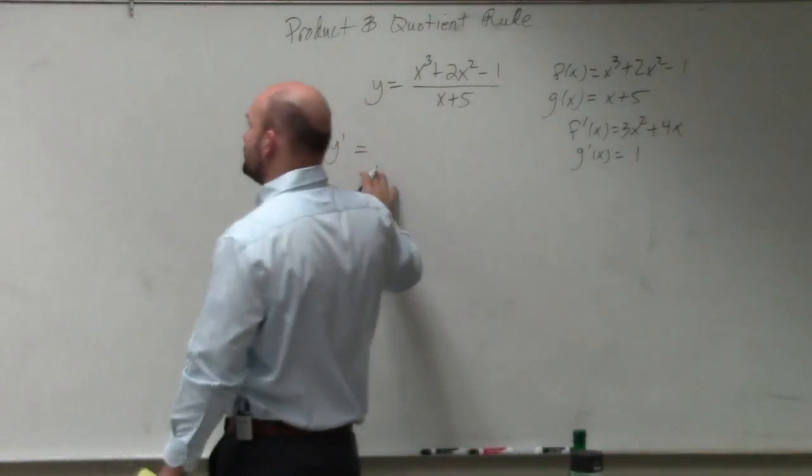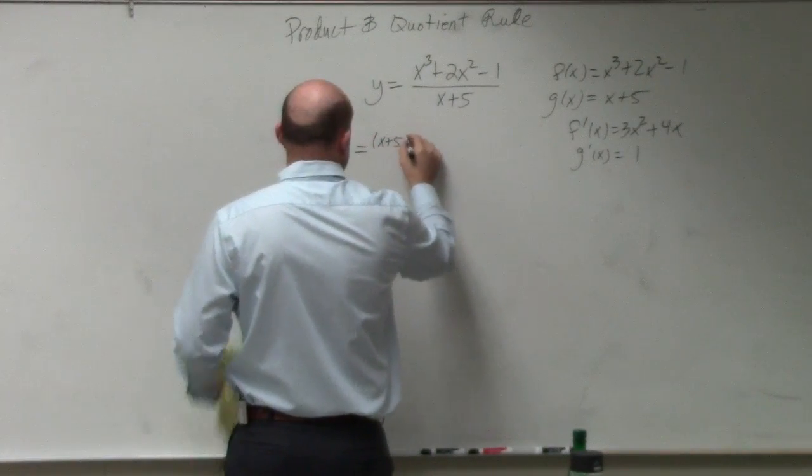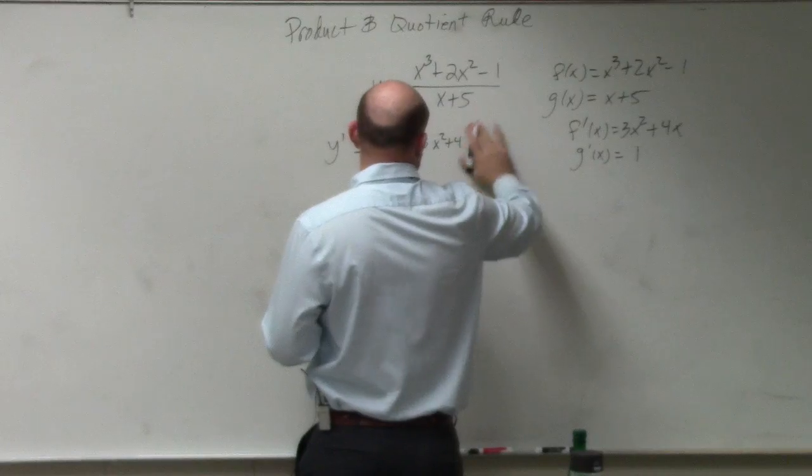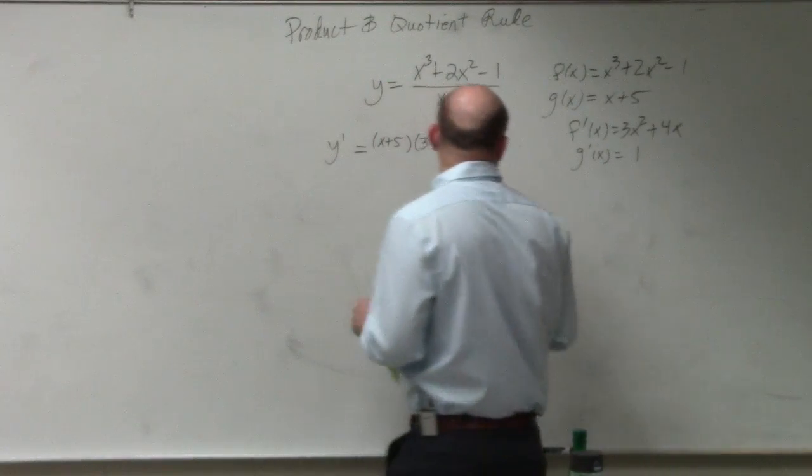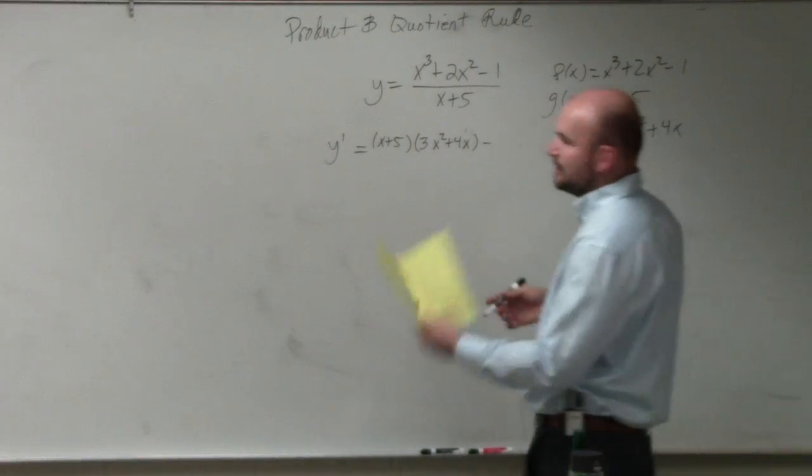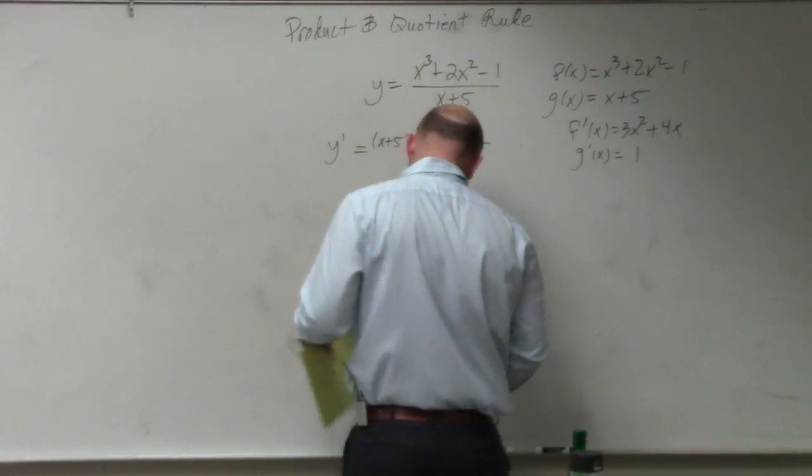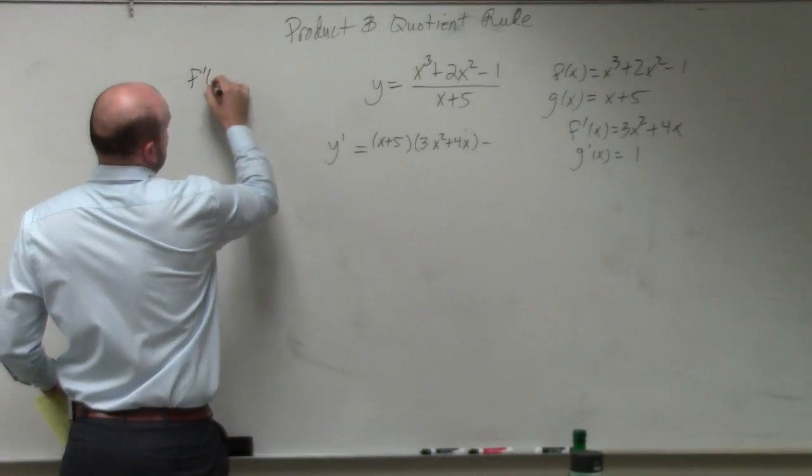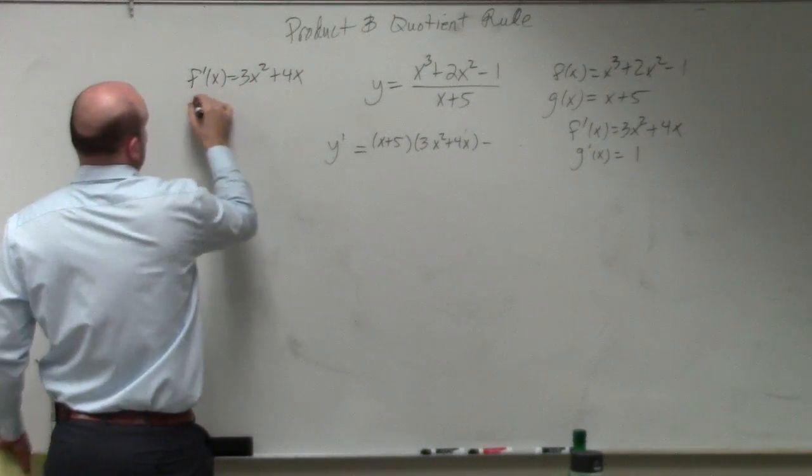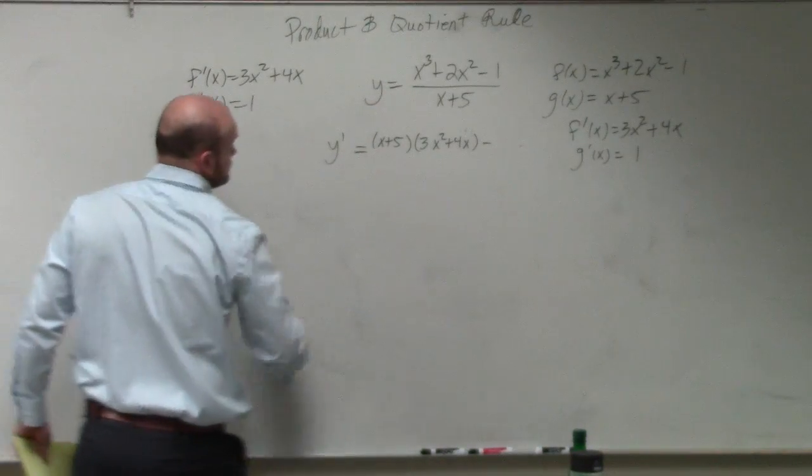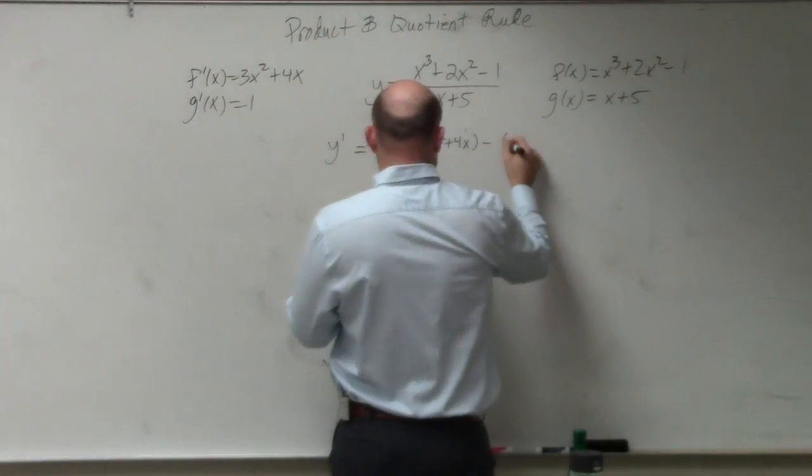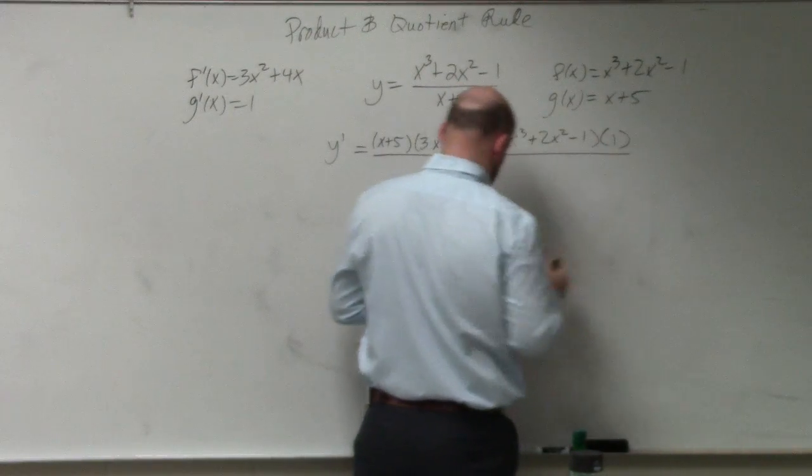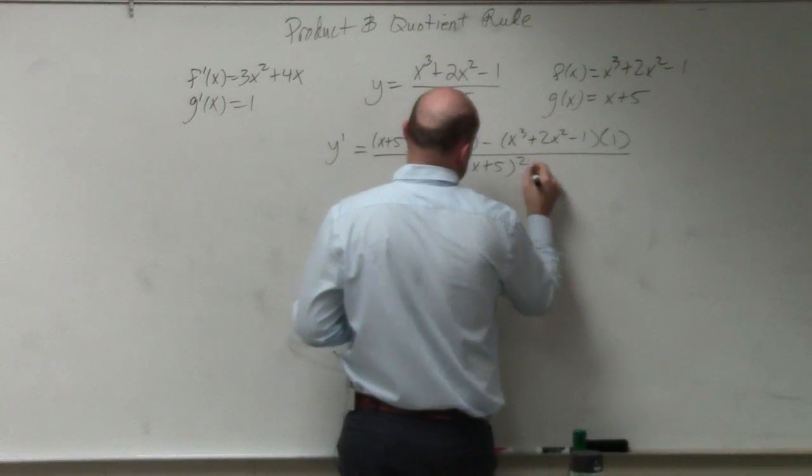So the quotient rule, we have g of x times, so g of x is x plus 5, times f prime of x, which is going to be 3x squared plus 4x. And then that's going to be minus f of x times g prime of x, or f of x times g prime of x, which now I'm running out of space, of course. Let's write them over here.